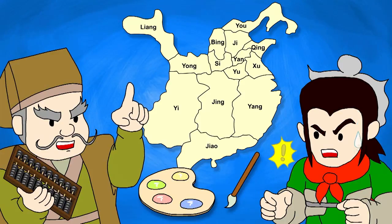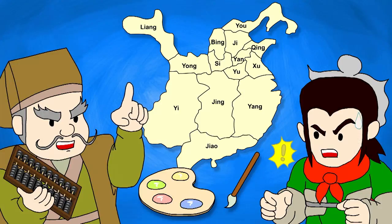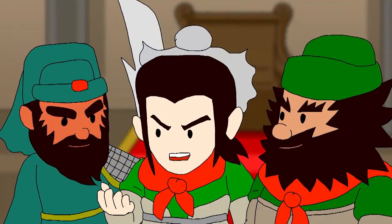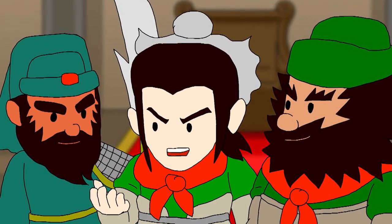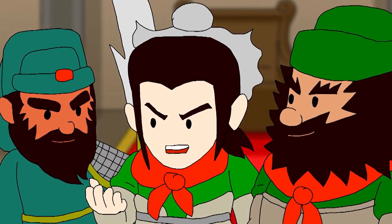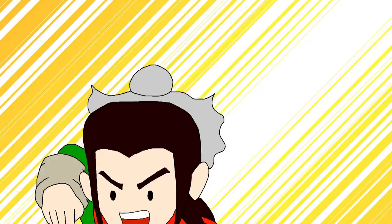The problem was to colour a map of the Han dynasty using at most four colours, such that adjacent states didn't share the same colour. Liu Bei thought for quite a while but was unable to solve it, and so urgent was the need to borrow the horses that he sought help using the magical tablet.